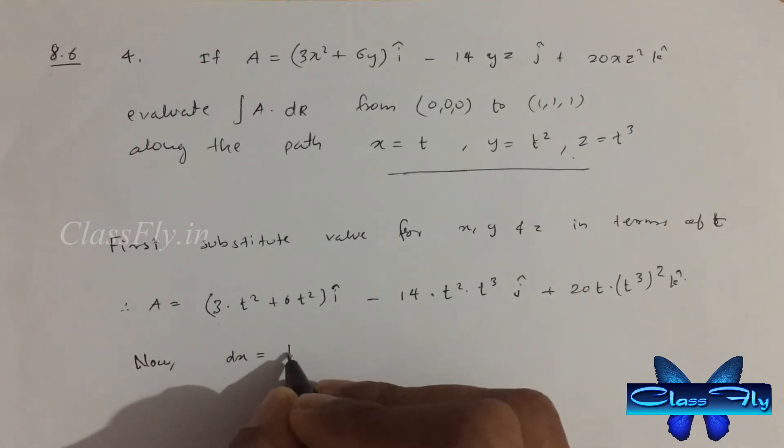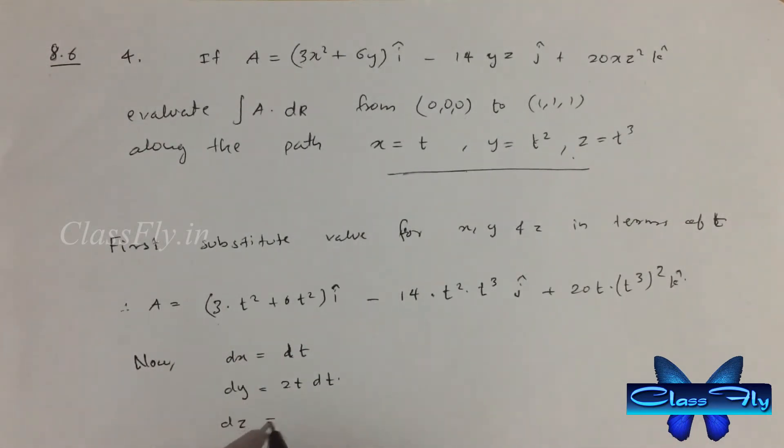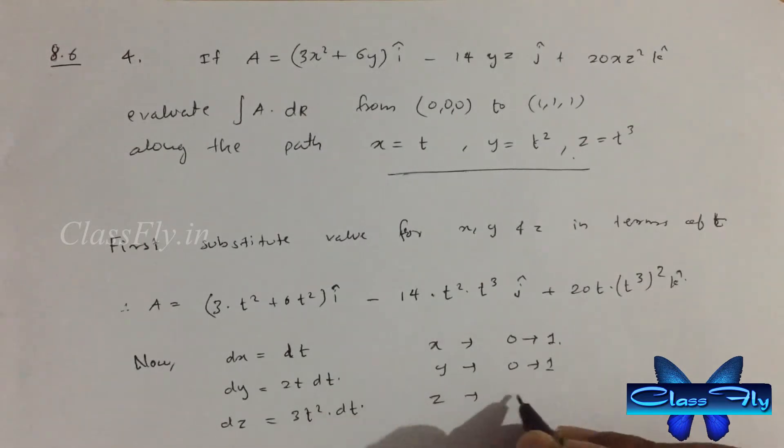dx equal to dt, dy equal to 2t dt, similarly dz equal to 3t square dt. Here, x, y, and z all vary from 0 to 1. Therefore, t also varies from 0 to 1, since x equals t, y equals t square, and z equals t cube.